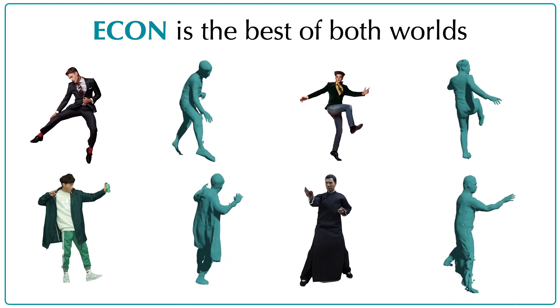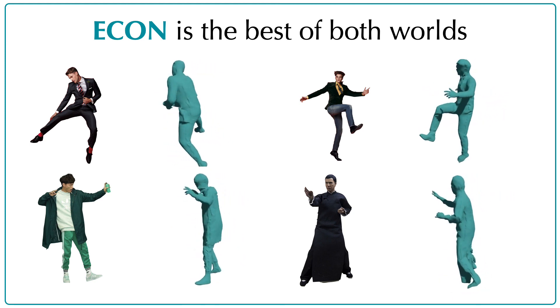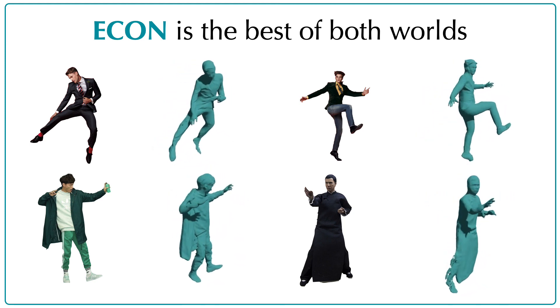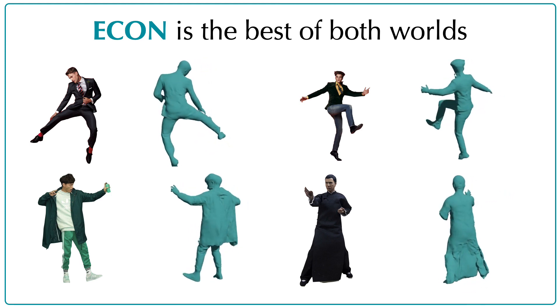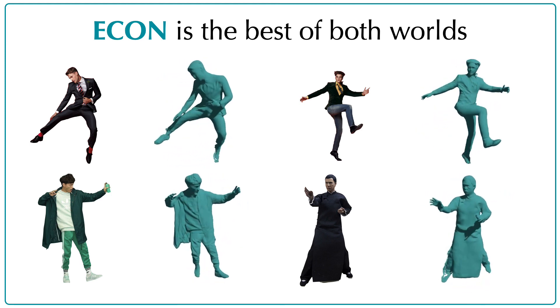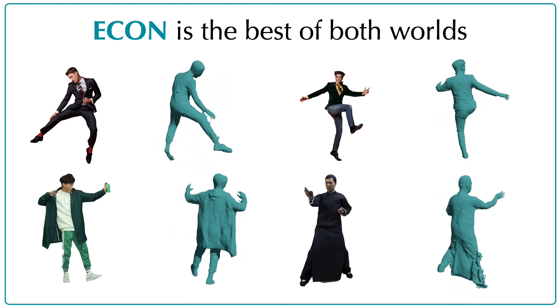ECON represents the best of both worlds. It keeps the robustness of explicit shape models for unseen poses, without sacrificing the topological flexibility of implicit models for loose clothing.